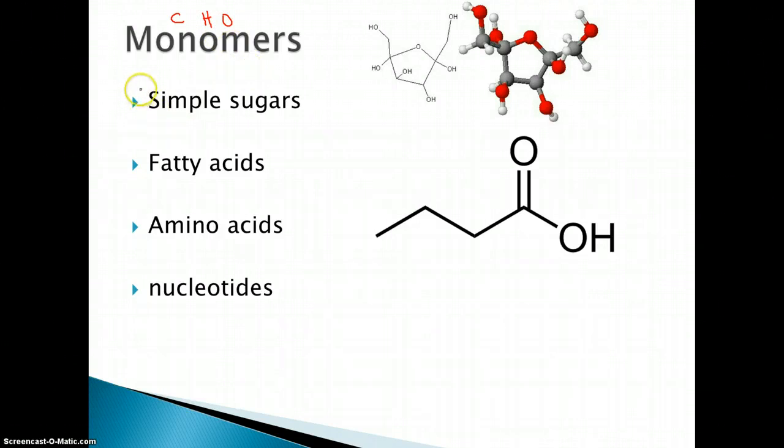So the 4 monomers that make up living things are simple sugars, fatty acids, amino acids, and nucleotides. And each of them get the properties from how the structures are aligned and their usage in cells. But we'll get into that later. But for now, what we need to understand is that they're simple structures.